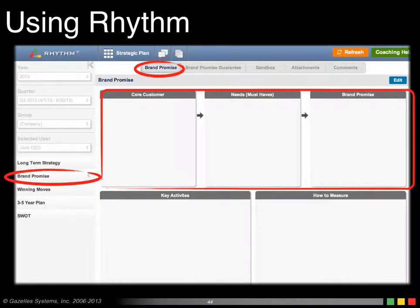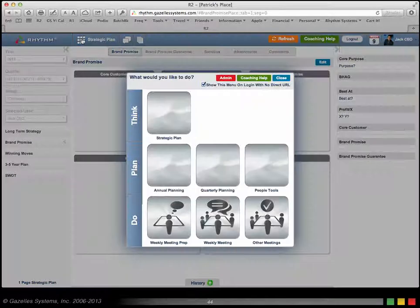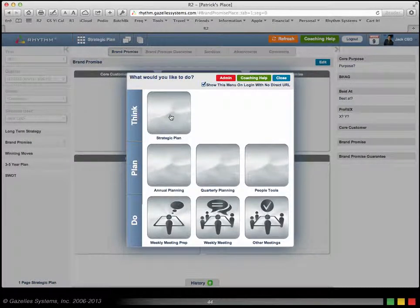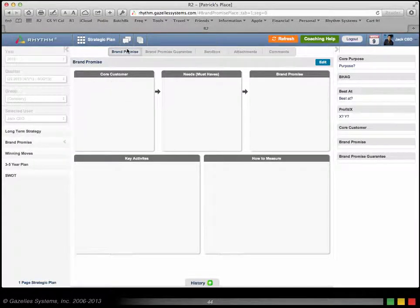Let me show you how Rhythm can help you work on this. If you go into Rhythm, you want to go to your brand promise. If you're not sure or you're somewhere else, click on the main menu under Think Strategic Plan, click on Brand Promise, and that's the first tab.